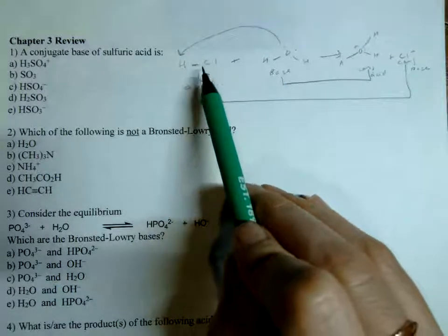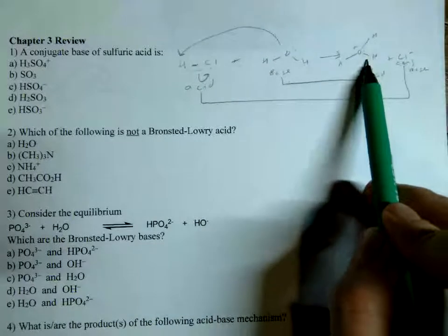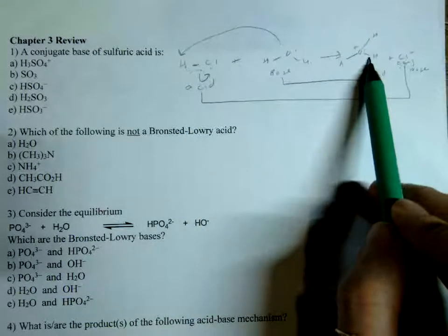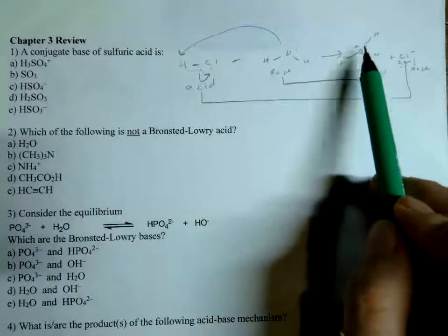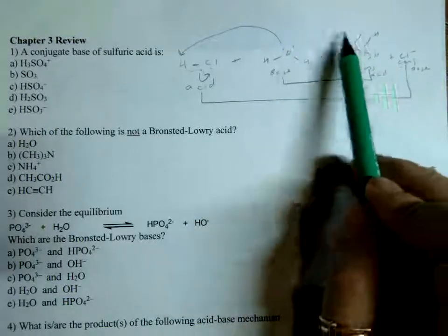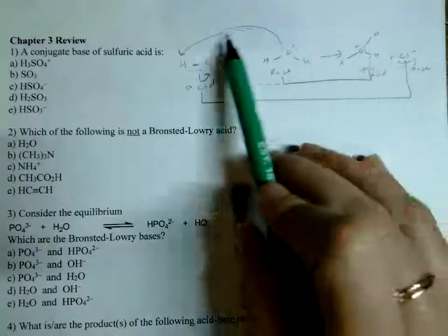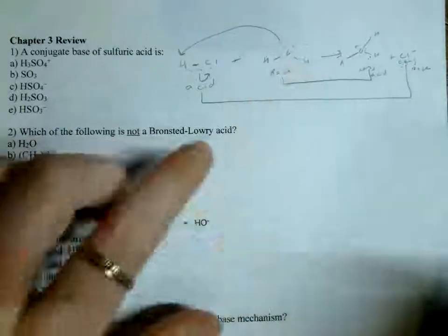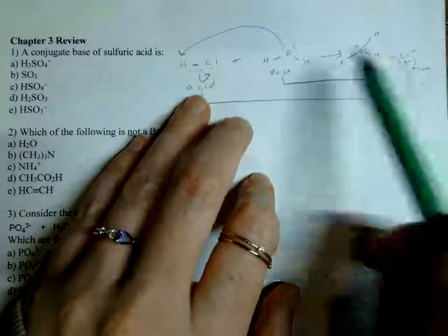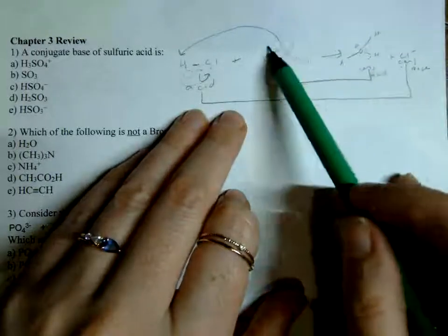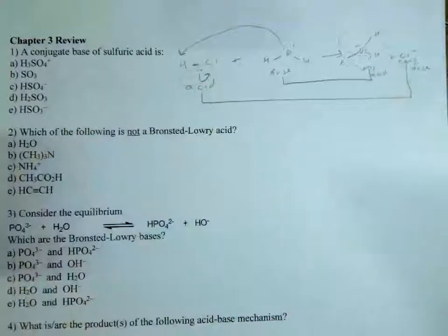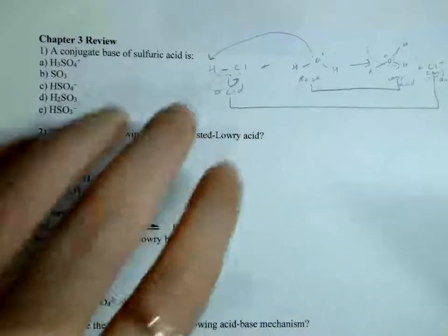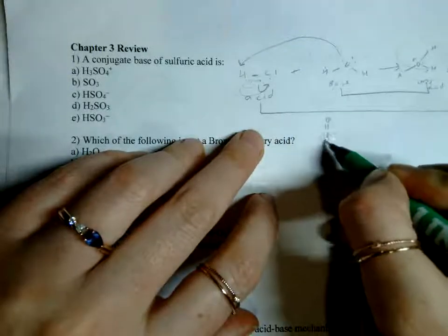If we go HCl + H₂O → H₃O⁺ + Cl⁻, HCl has lost a proton going forward and water has gained a proton. Going the reverse direction, H₃O⁺ loses its proton — now it becomes the acid and Cl⁻ becomes the base, stealing a proton to make HCl and leaving behind water. So these are our two acids, and when an acid loses a proton what's left behind is the conjugate base.